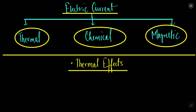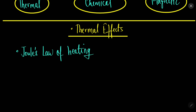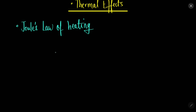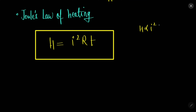The first thing in thermal effect of electric current is that whenever current flows in a wire, it produces a lot of heat. The first law is Joule's law of heating. This law tells us that whenever we have a current in a conductor, a lot of heat is produced, given by the equation: heat equals I squared RT. More will be the heat when more will be the current.